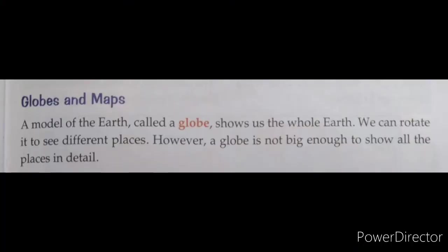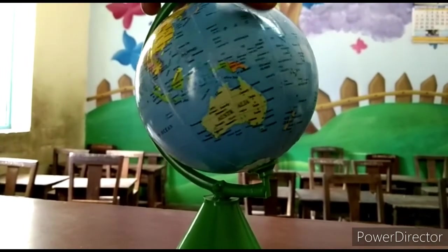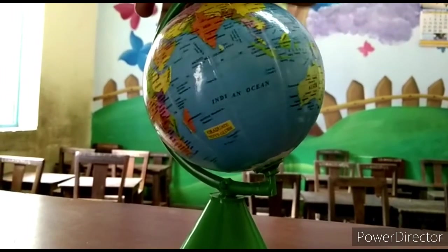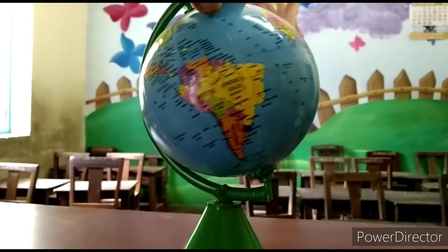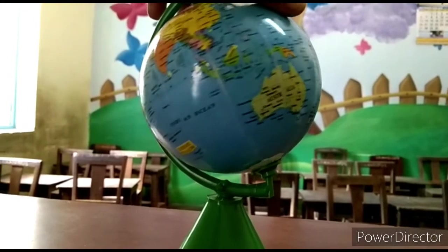Globes and maps. A model of the earth called a globe shows us the whole earth. We can rotate it to see different places. However, a globe is not big enough to show all the places in detail. You can just see one area at a time — you cannot see the whole earth. It has limited explanations and there is no complete detail.